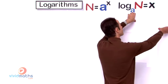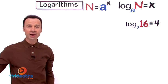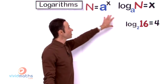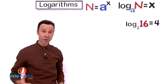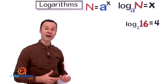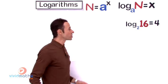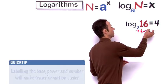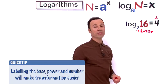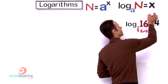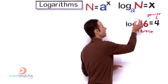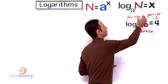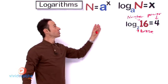Let us do the first example. We have log base 2, 16 equals 4 — that 4 is the power, the x. We want to transform this into exponent form. The first thing to do is identify each component: the little 2 down here is the base, the 4 is the power equivalent to x, and the 16 in the middle is the number we are working with.